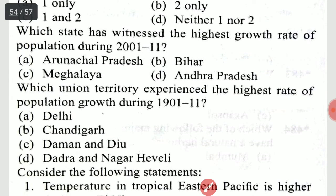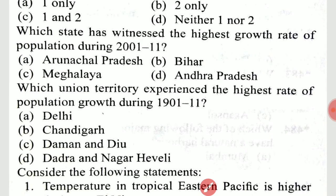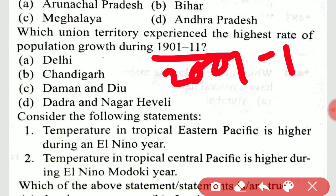Which state has witnessed the highest growth rate of population during 2001 to 2011? The highest growth rate is Meghalaya. Which union territory experienced the highest rate of population growth during 2001 to 2011? It is Dadra and Nagar Haveli.